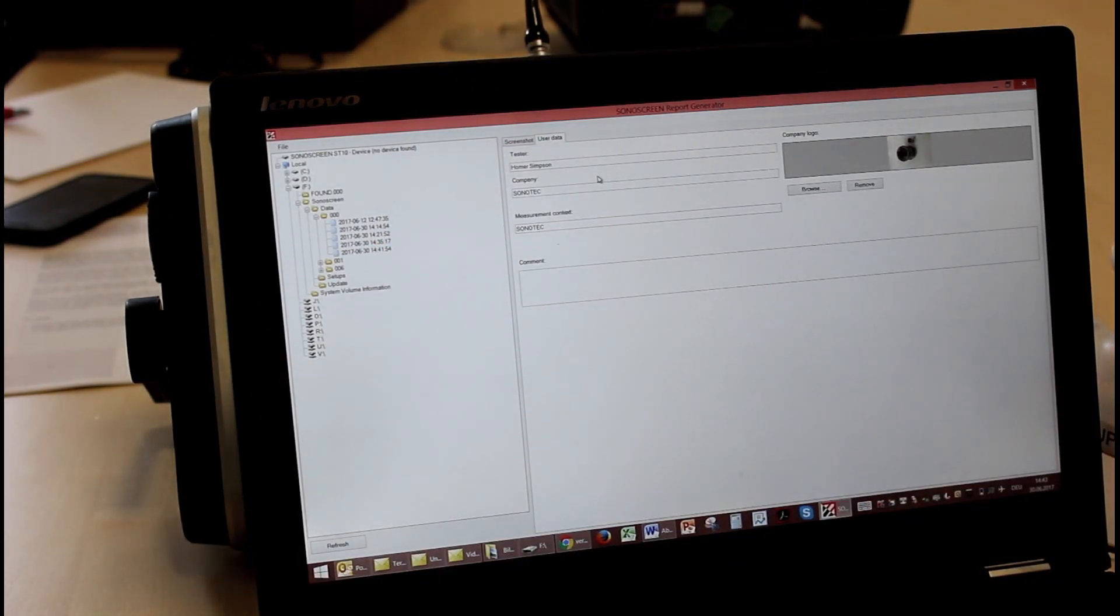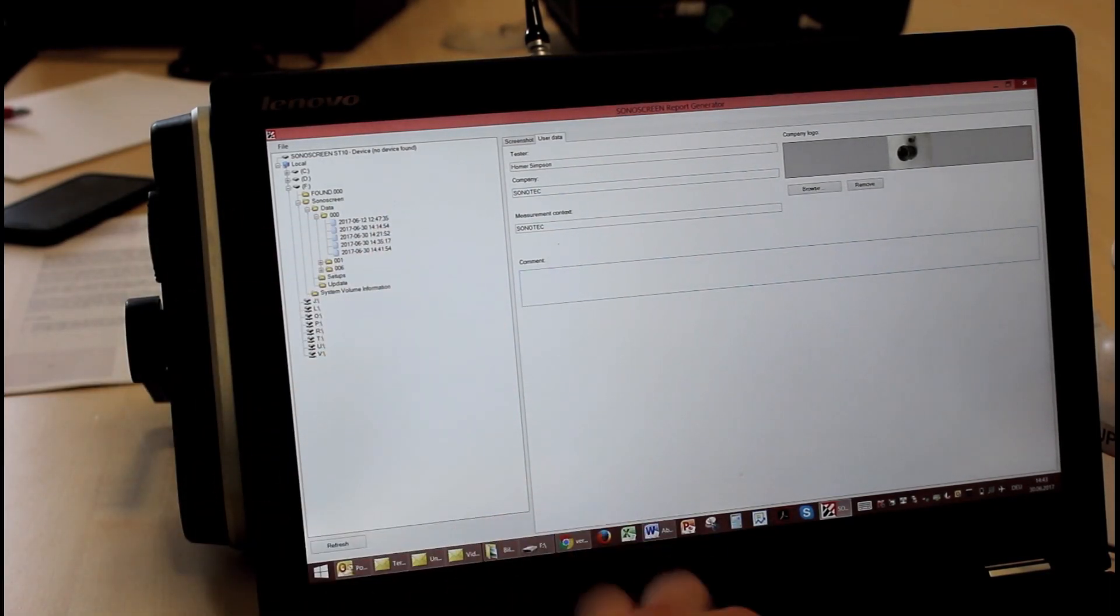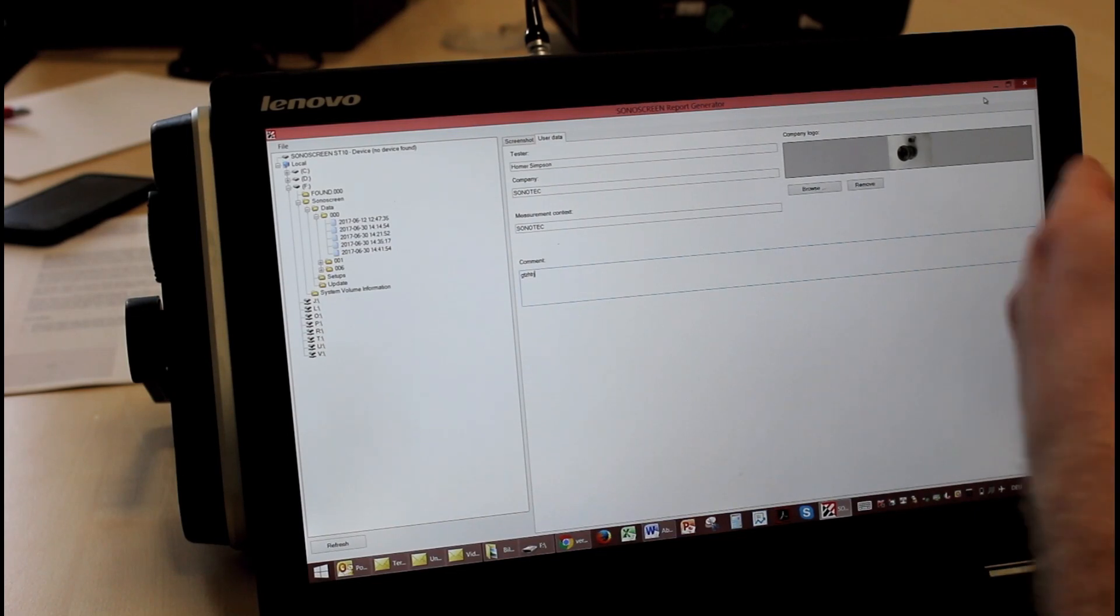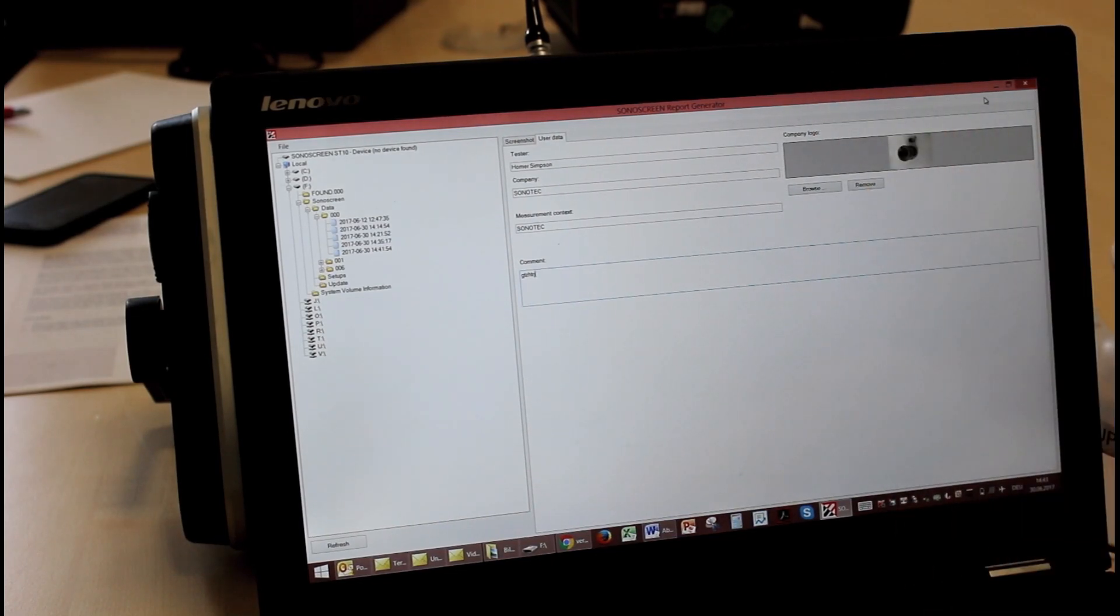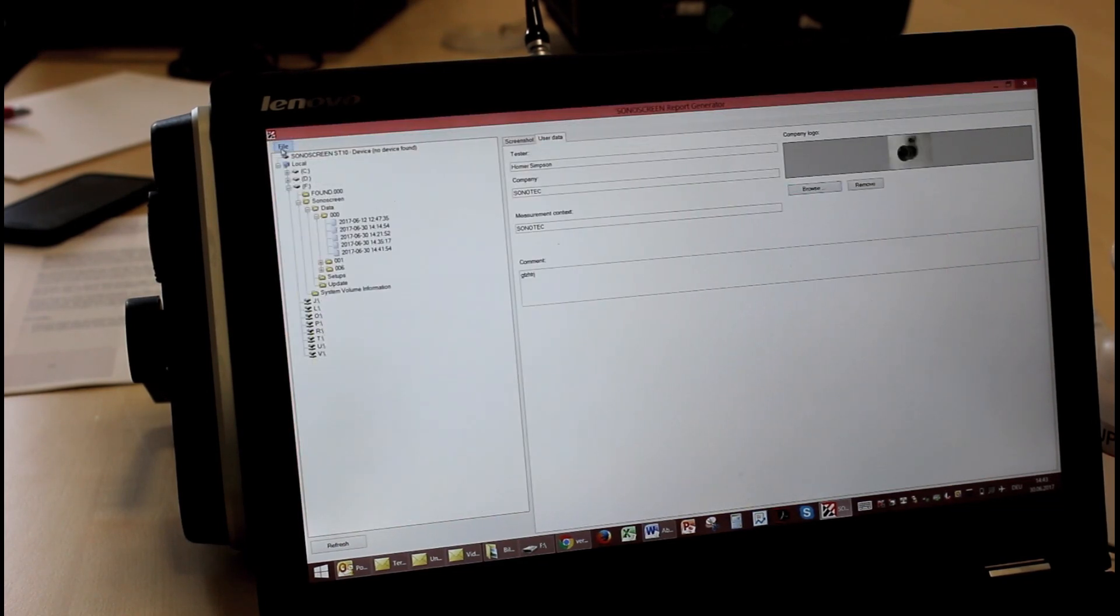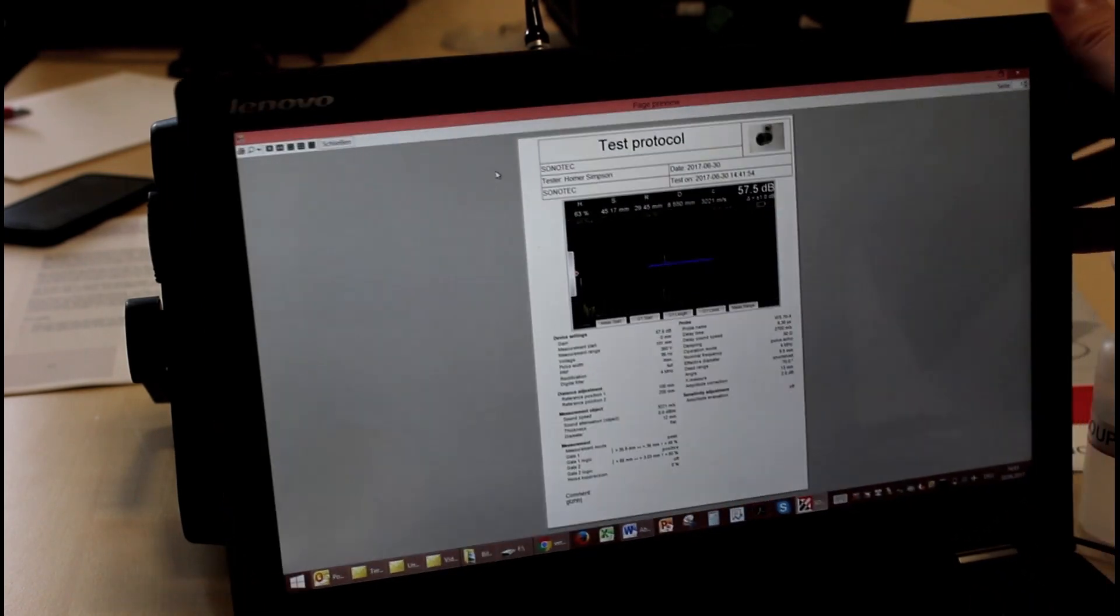You can also type in some user data like the tester name, the company name, measurement context, some comments. And you can browse a company logo or put in any picture like a picture of the test object, whatsoever. And then you can just go to print or create your PDF.